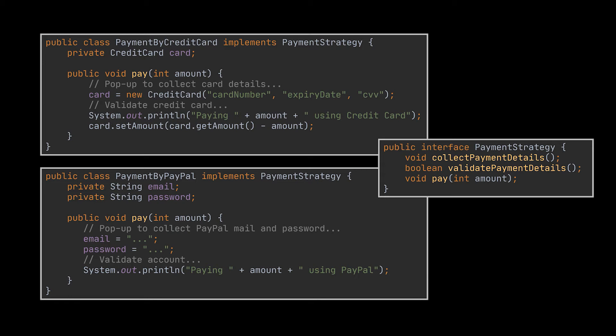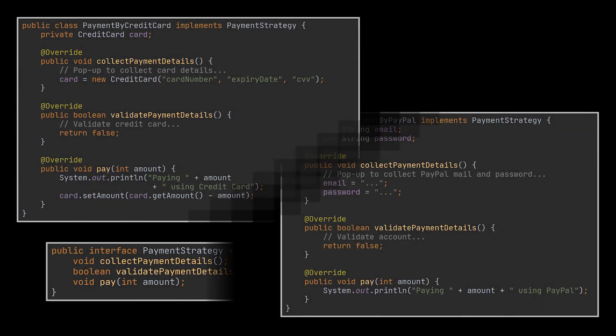So in this example we can extract the collect payment details, the validate payment details, and the pay methods. This will grant us more flexibility later on while shaping the skeleton of the common algorithm.